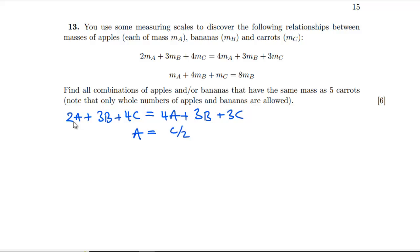And then we've got on the other one that A plus 4B plus C equals 8B. So we've got 3 over 2C. So B is equal to 3 eighths of C. Right. So we now have to get to 5 lots of C by combining A's and B's. So for 5 carrots, well, we could have 10 apples. That would certainly work.